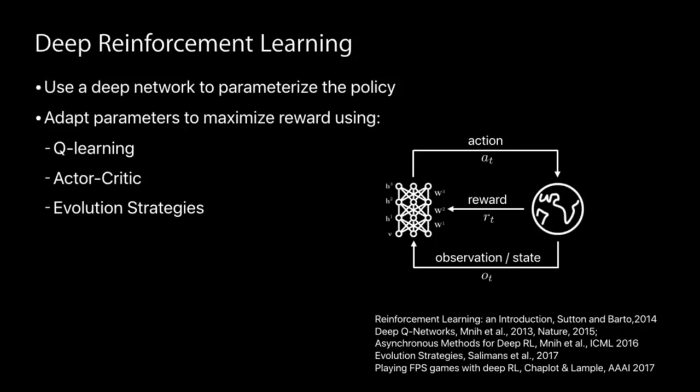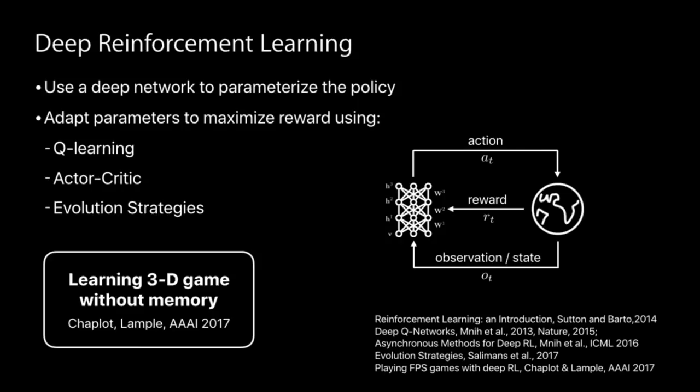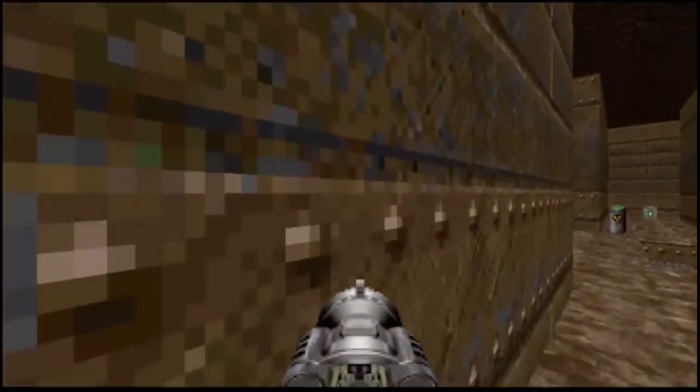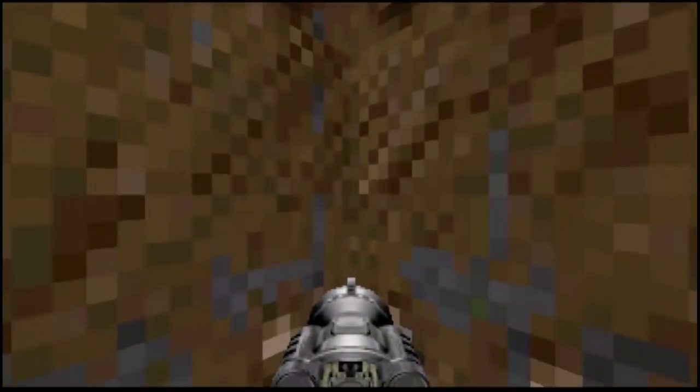We adapt parameters to maximize overall rewards using Q-learning, actor-critic, and there's been a lot of work on different algorithms including evolution strategies, which is akin to doing a finite differences method. Let me show one particular example of a reinforcement learning agent learning to play a 3D game — this is without memory. This is work of Chaplot and Lampler. The input to the environment is just a 2D image, a frame.